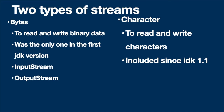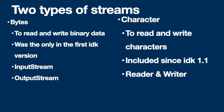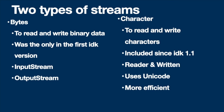Byte streams are implemented through the abstract classes InputStream and OutputStream, and all other byte stream classes extend from these. The abstract classes used for character streams are Reader and Writer, and all other character stream classes extend from these classes and implement their methods.